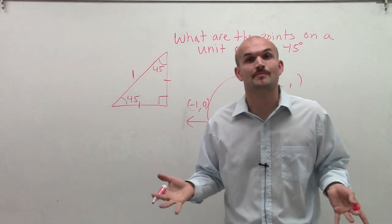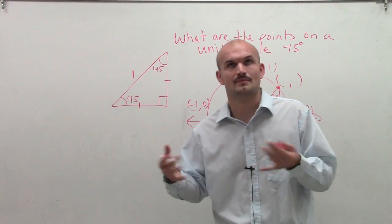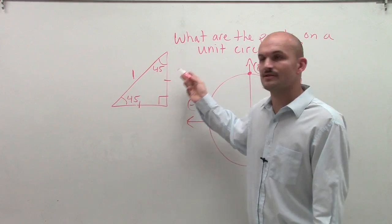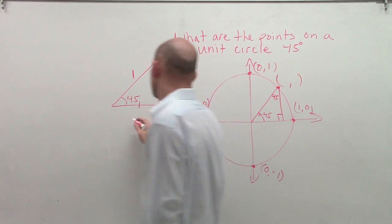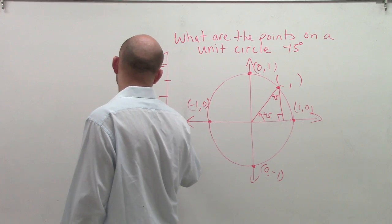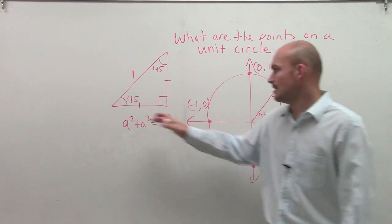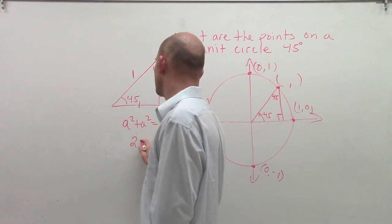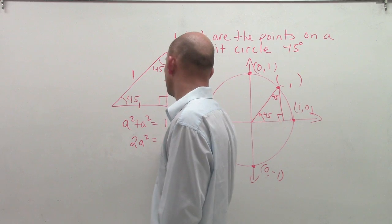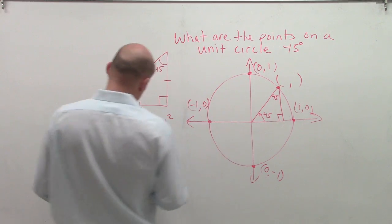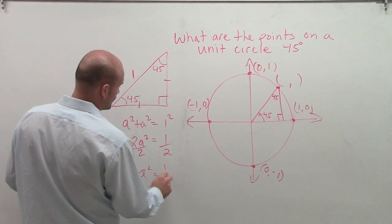So I'm going to set up the Pythagorean theorem. Rather than a squared plus b squared, since these are the same, I'll use the same variable. So a squared plus a squared equals 1 squared, because my hypotenuse is 1. Adding them up: 2a squared equals 1. Divide by 2: a squared equals 1/2.